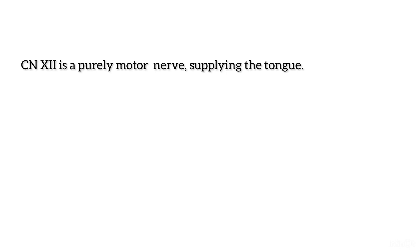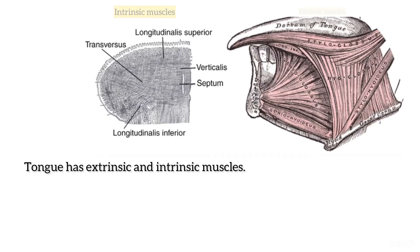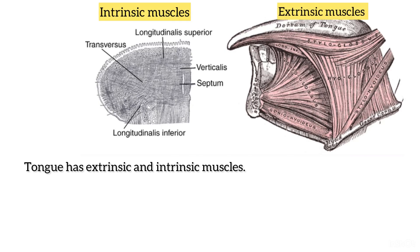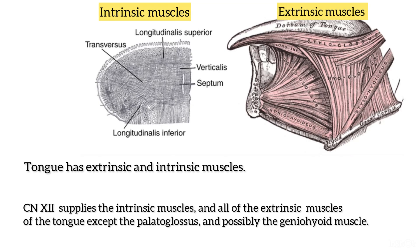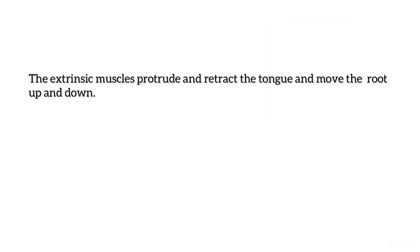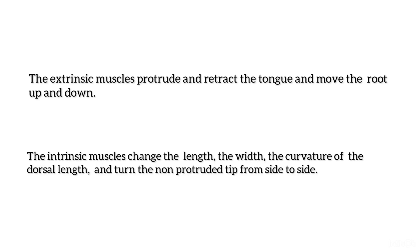It is a purely motor nerve which supplies the tongue. The tongue has extrinsic and intrinsic muscles. The twelfth nerve supplies the intrinsic muscles and all the extrinsic muscles of the tongue except the palatoglossal and possibly geniohyoid muscle. The extrinsic muscles protrude and retract the tongue and move the root up and down, while the intrinsic muscles change the length, width, and curvature of the dorsal surface, and turn the non-protruded tongue from side to side.